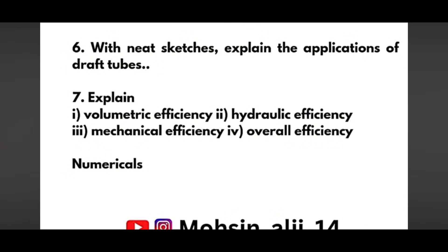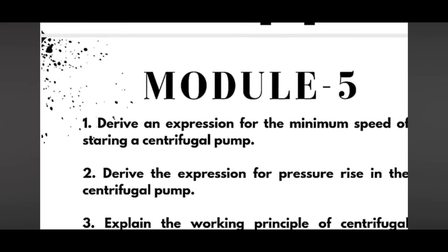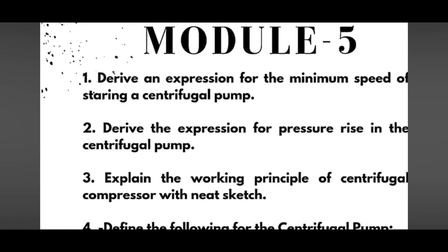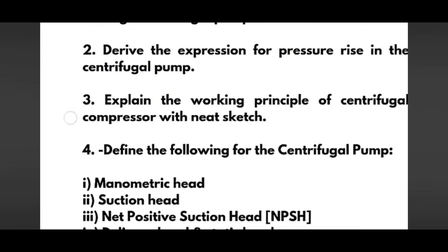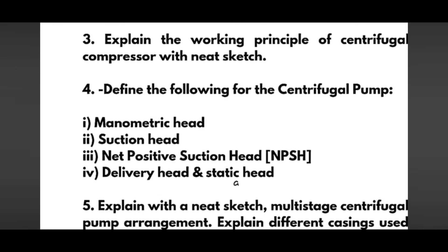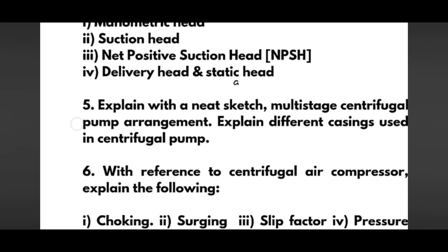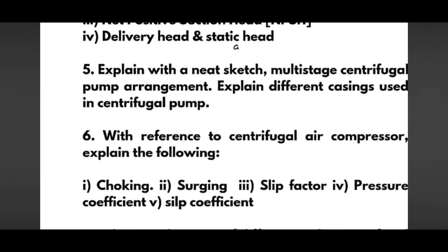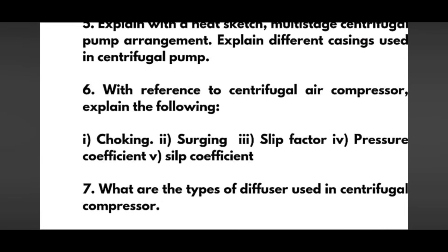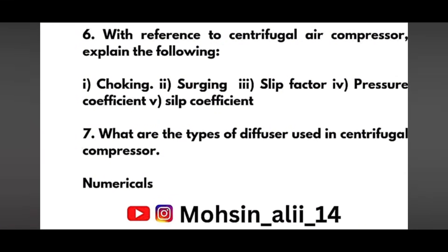Next we have Module 5: derive an expression for minimum speed of starting a centrifugal pump — this is again a 10-mark question. Derive the expression for pressure rise in the centrifugal pump — this may be six or seven marks. Explain the working principle of a centrifugal compressor with a neat sketch. Define the following for the centrifugal pump: manometric head, suction head, net positive suction head, delivery head, and starting head — these are two-mark definitions. Explain with neat sketch multi-stage centrifugal pump arrangement and explain different casings used in centrifugal pumps. With reference to centrifugal air compressor, explain choking, surging, slip factor, pressure coefficient, and slip coefficient, and the types of diffuser used.